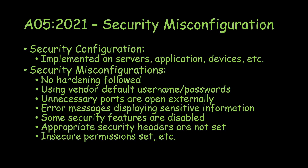Another misconfiguration is error messages displaying sensitive information. Stack traces can reveal things like SQL query commands, or disclose framework version numbers such as .NET versions. This helps an attacker identify whether an outdated version is in use and plan attacks accordingly. They can also collect any sensitive information exposed through these error messages to use in further exploitation.